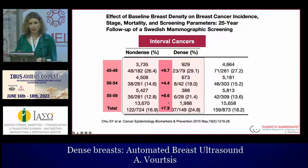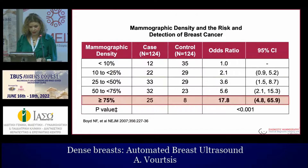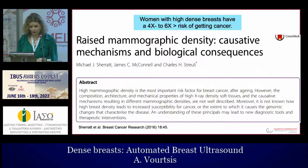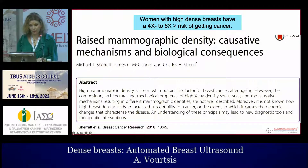We have interval cancers — cancers that develop between screening rounds — and most of the time those cancers are symptomatic. According to another study by Boyd, he showed that in women with extremely dense breasts, there is an 18 times higher risk of developing interval cancer between screenings. In addition to the low sensitivity in dense breasts, these women also have a four to six times higher risk of developing breast cancer.